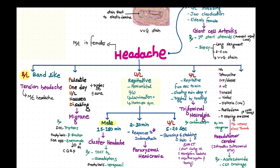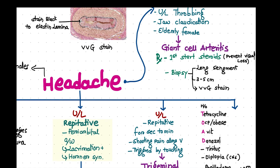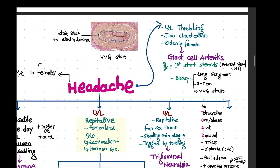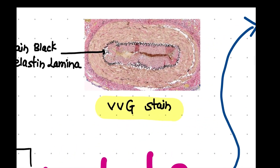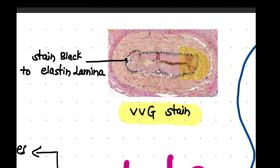Another important condition is giant cell arteritis. If there is unilateral throbbing headache with jaw claudication, most commonly seen in elderly females — this is giant cell arteritis. We treat first with steroids to prevent visual loss. After that, we perform biopsy of a long segment — about 3 to 5 centimeters — and stain with VVG, which stains the elastin lamina.